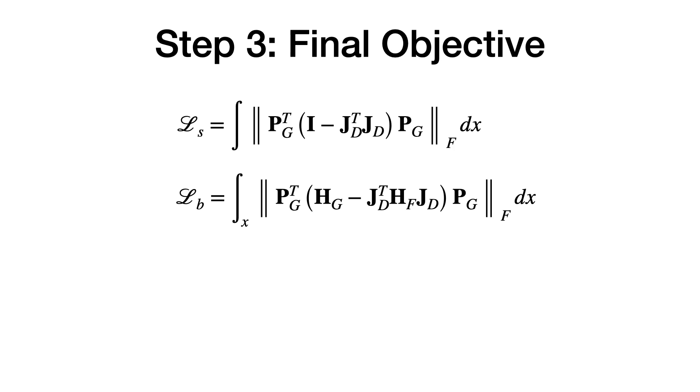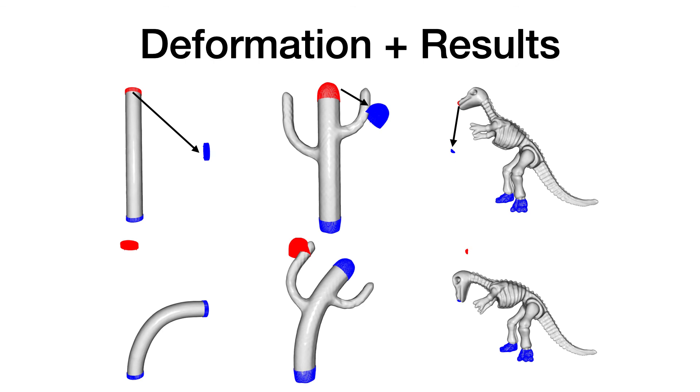Now let's put everything together. We now have losses that encode the resistance to stretching and bending. Our final training objective will include these two losses and a loss that enforces the model to satisfy user specification. We use the Adam optimizer to minimize these losses to find the appropriate deformation field. Here are some deformation results for our algorithm. Our method is capable of giving very natural deformation to very high-resolution shapes. Please refer to our paper for more results and detailed derivation.